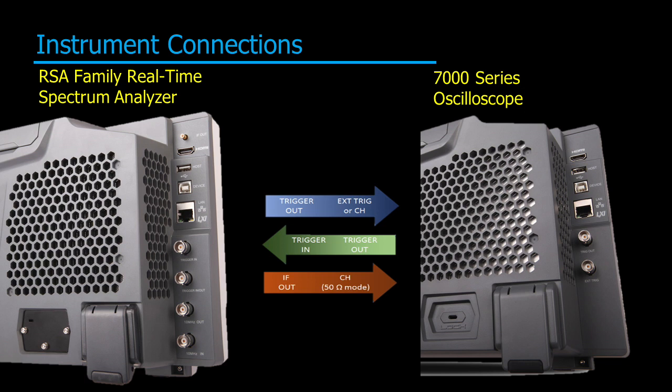Most importantly, we use the RF output of the analyzer, which gives us a look at the real-time bandwidth brought down to a 430 megahertz carrier into a channel on the oscilloscope. That gives us the ability to look at those RF signals and time correlate them with other embedded channels. We can use the channel offset timing capabilities of the oscilloscope to eliminate any timing latency and correlate our signals perfectly.